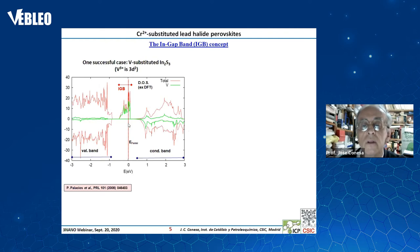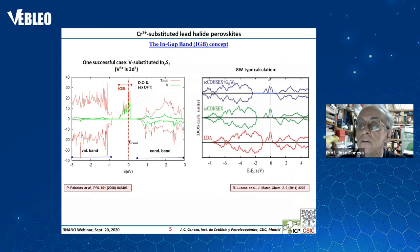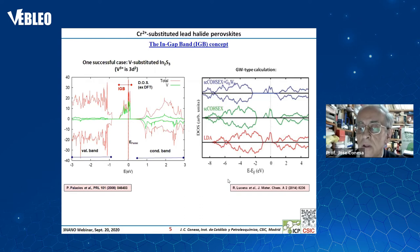In all these cases, these are results of plain DFT, but we have also studied what happens with a GW-type calculation. As you can see with the GW approximation — which is a very good approximation for computing band gaps in semiconductors — we again have the Fermi level here, and it is possible to have again the partially filled intermediate band.